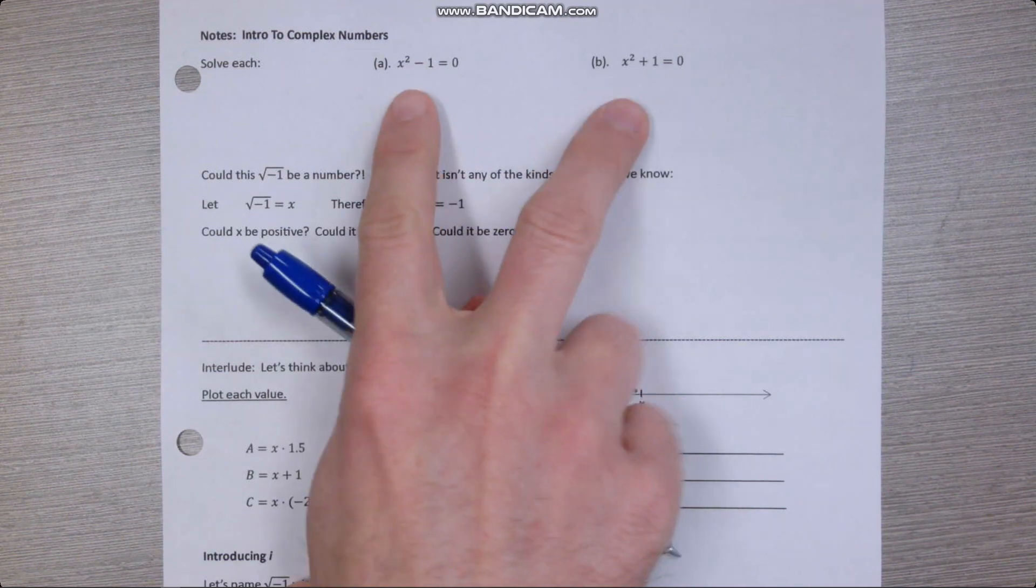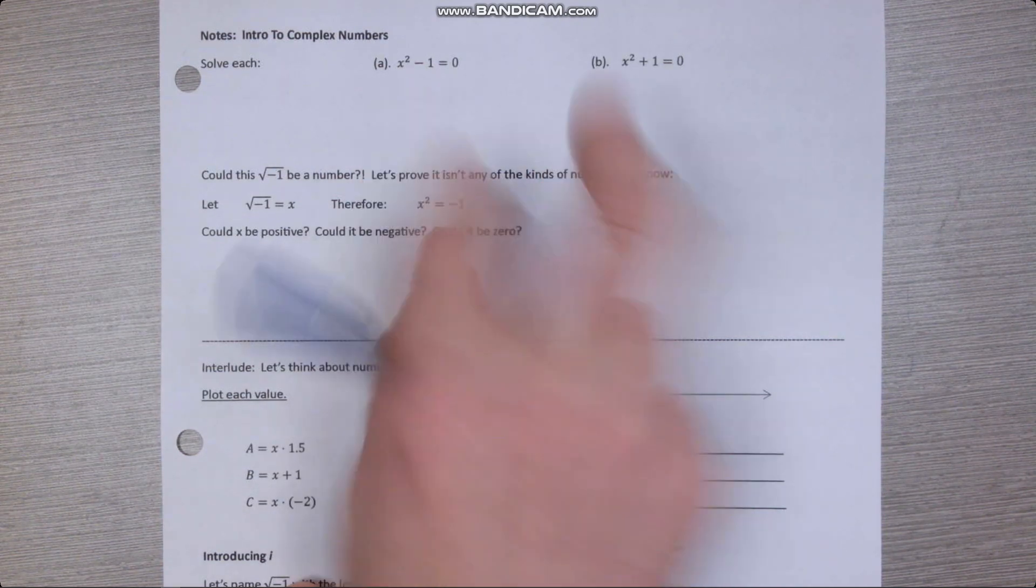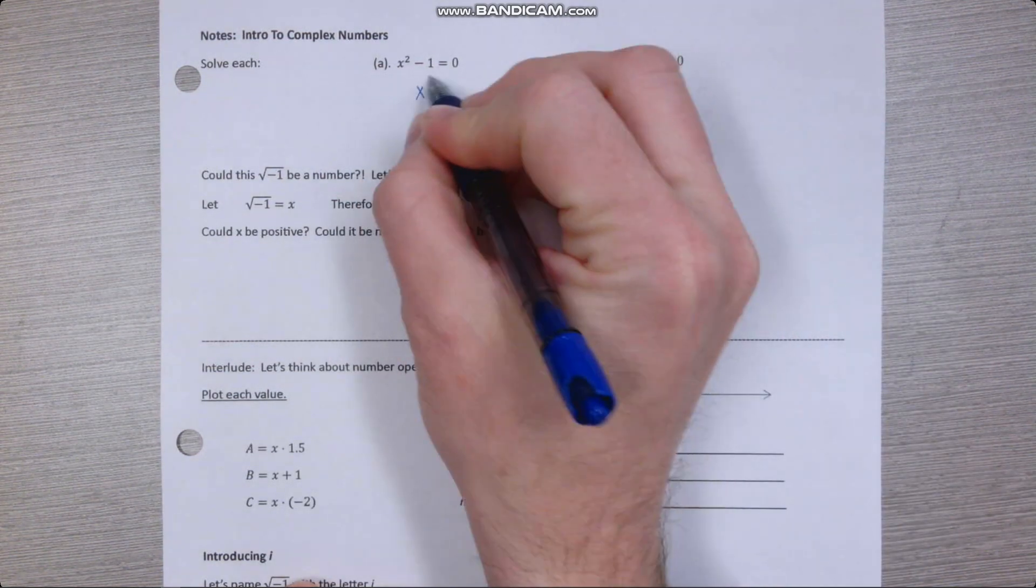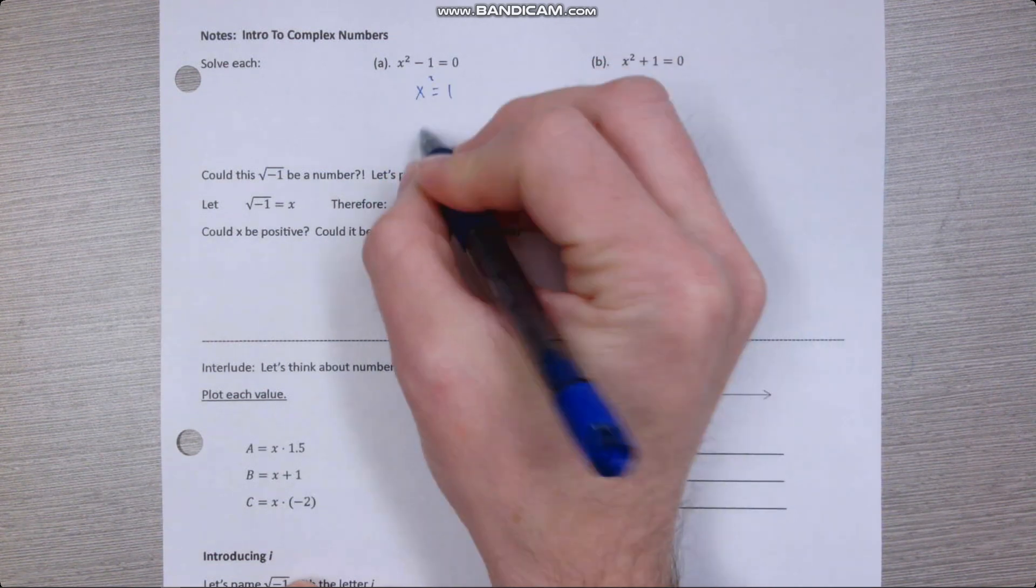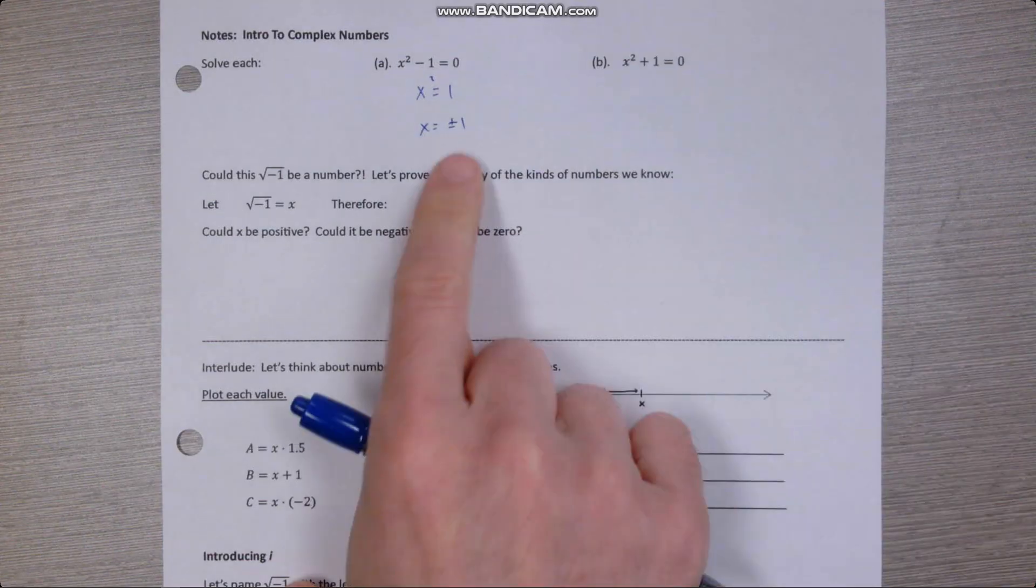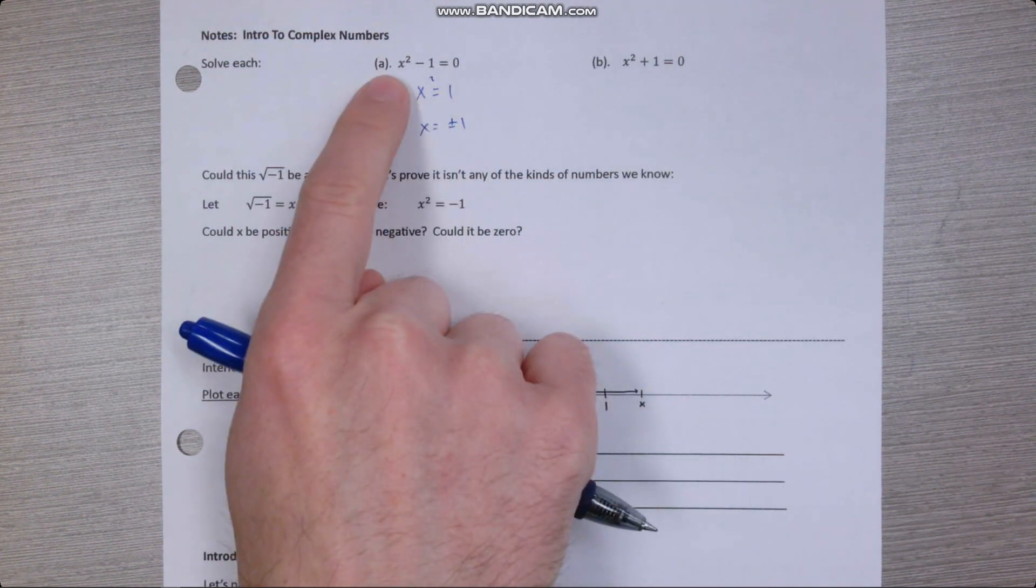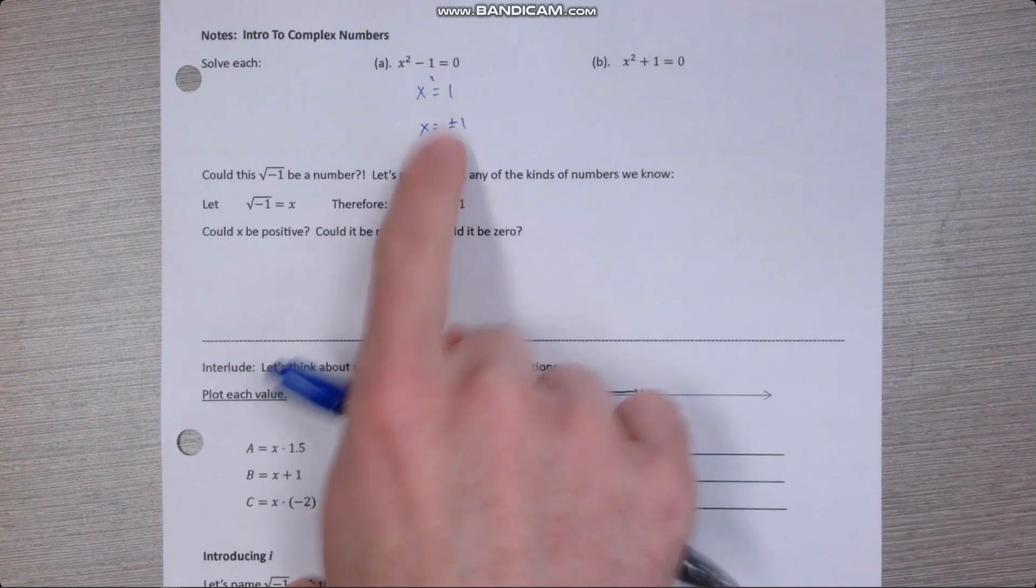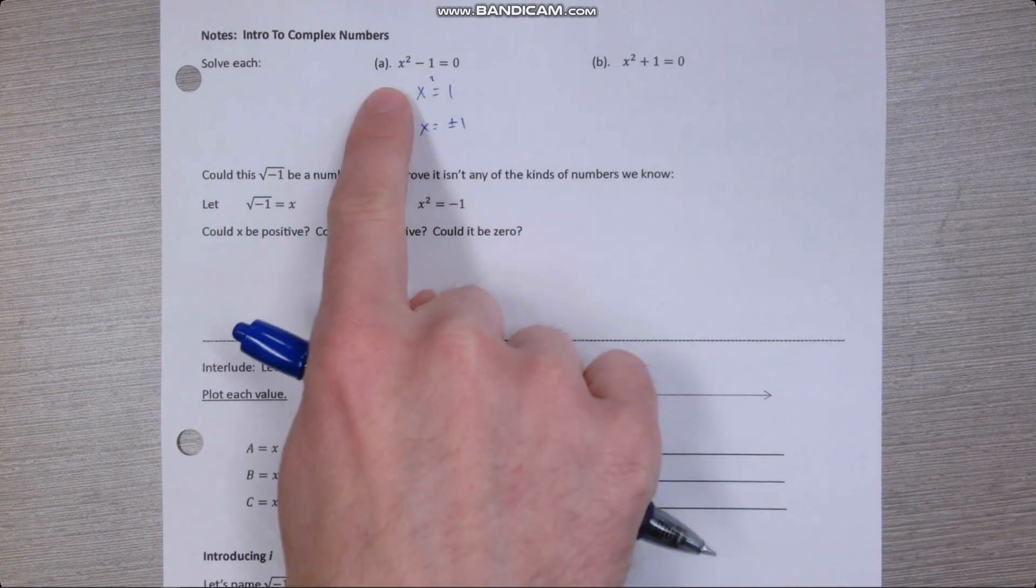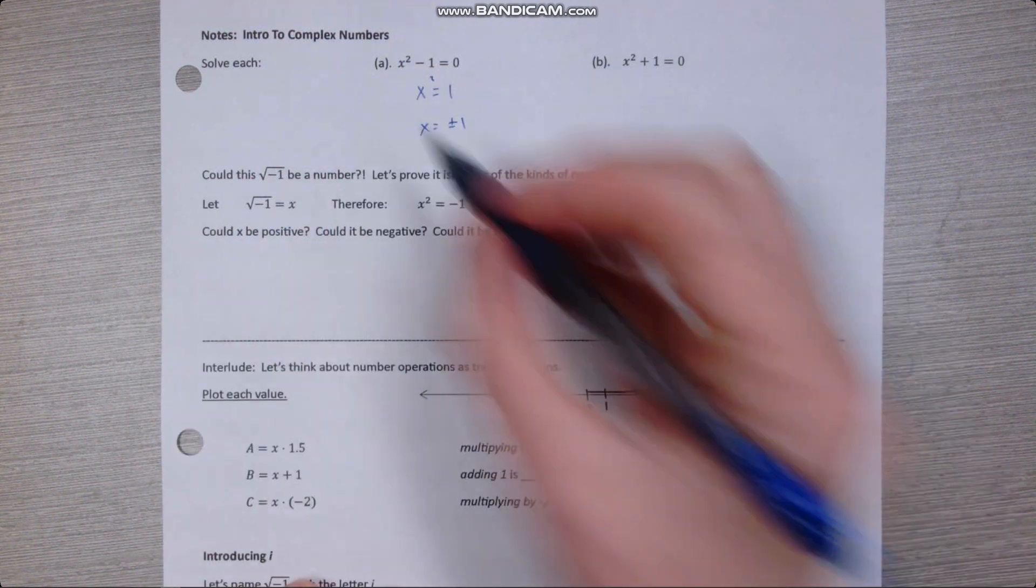To introduce complex numbers, let's try and solve these two equations. So isolating the x, in this case we have x is plus or minus 1, and you can verify that that works by plugging 1 back in. 1 squared is 1, minus 1 is 0. Or negative 1, plug it back in. Negative 1 squared is 1, minus 1 is 0. So those work.